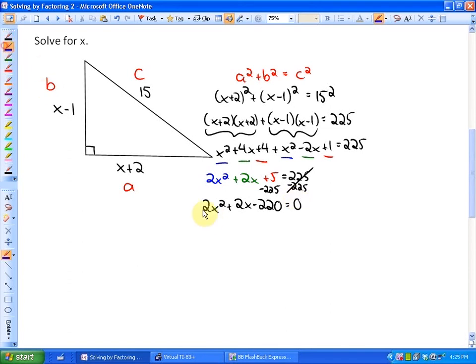If we factor out the greatest common factor, which in this case is 2, we'll be left with a trinomial of x squared plus x minus 110. And in this case, this trinomial here can be factored as 2 times x plus 11 and x minus 10.